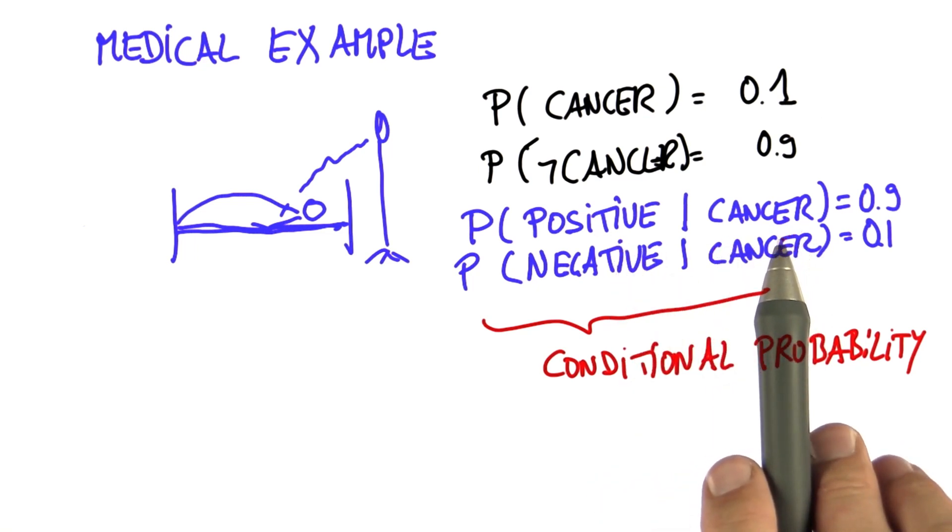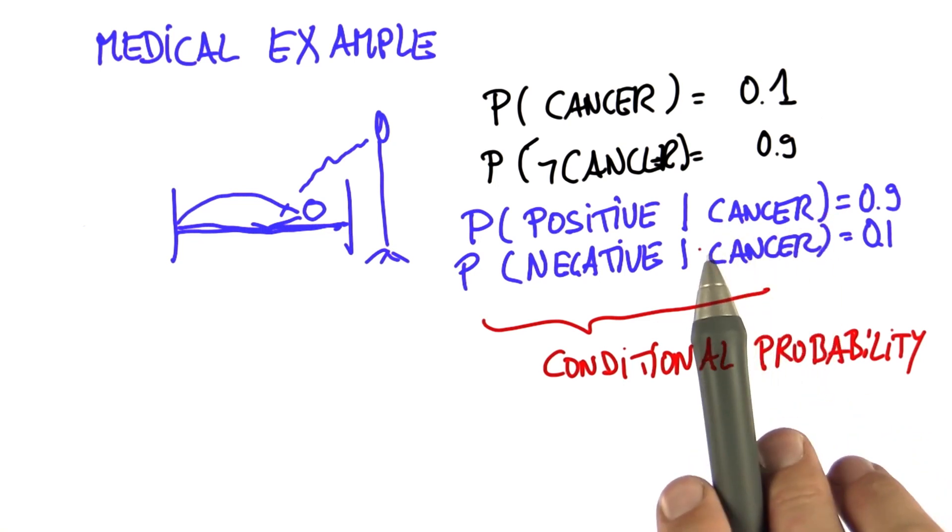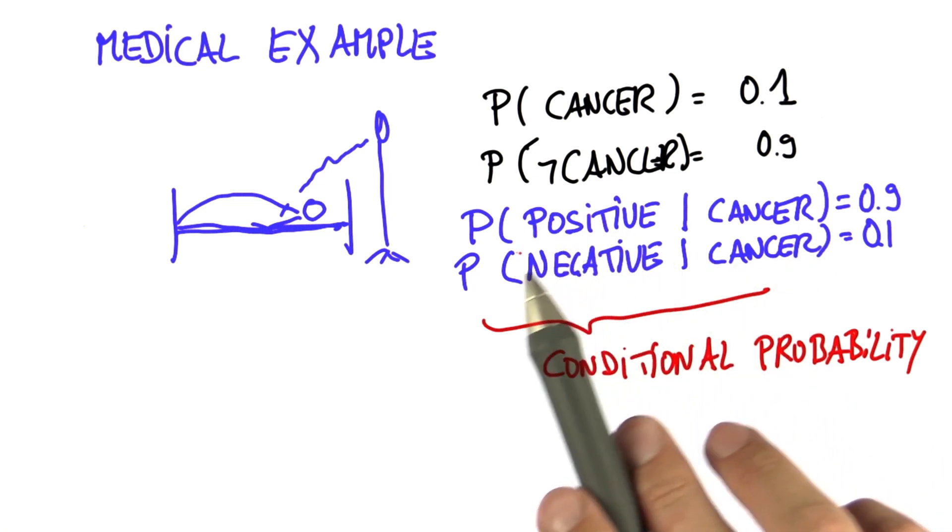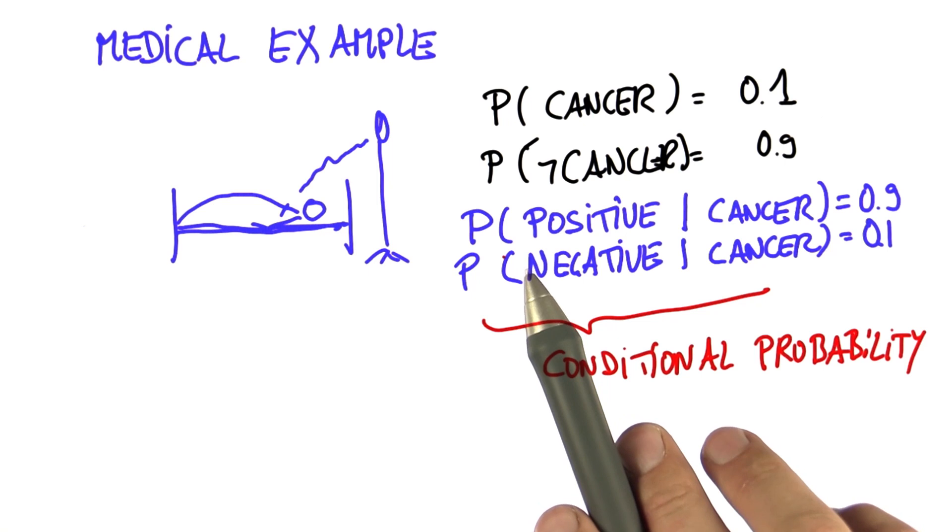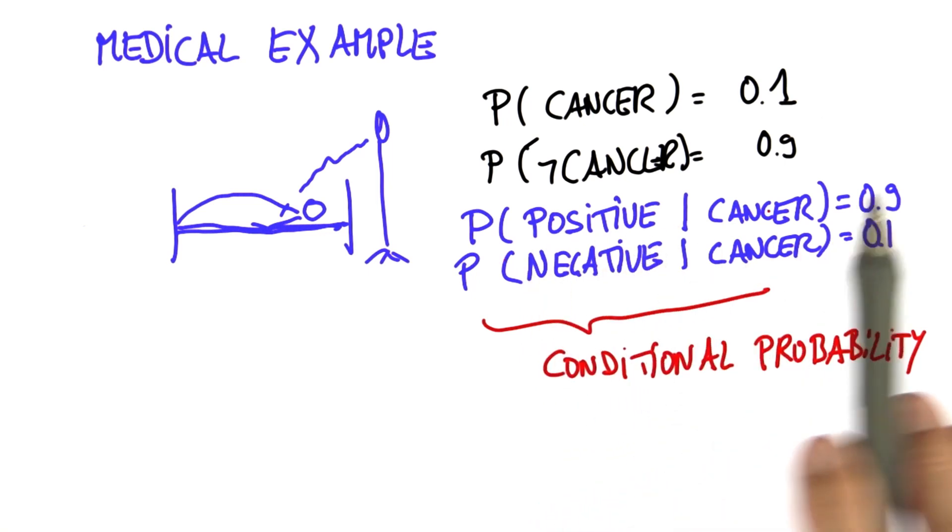We can tell with absolute certainty whether the person has cancer. And we can determine what the outcome of the test is. This is a test that isn't exactly deterministic. It makes mistakes. But it only makes a mistake in 10% of the cases, as illustrated by the 0.1 down here.